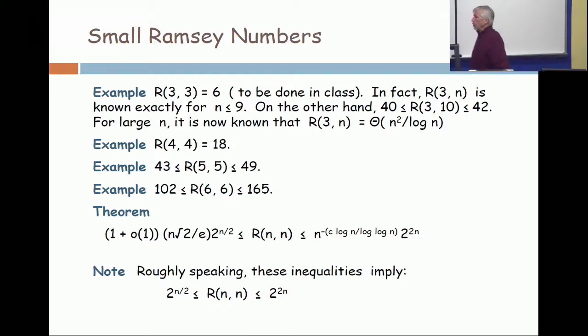All right, the lower bound was 2 to the n over 2. When n is 12, that's 2 to the 6. 2 to the 6 is 64.